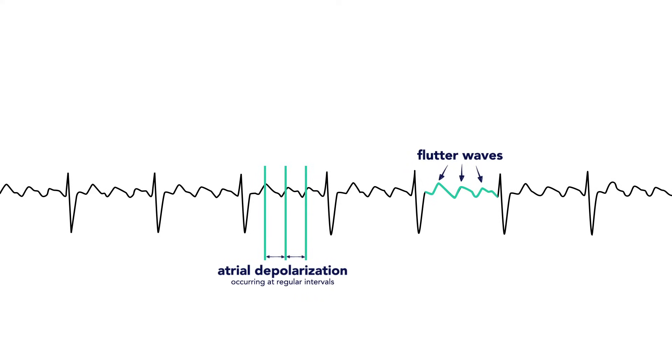Additionally, compared to atrial fibrillation, with atrial flutter you'll often see identical r-to-r intervals depending on the interval in which the electricity is conducted through the AV node to produce a QRS complex.